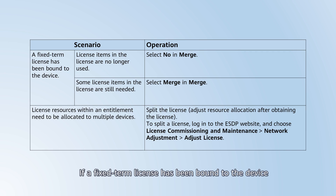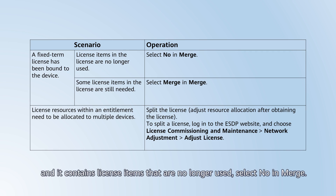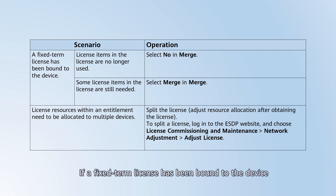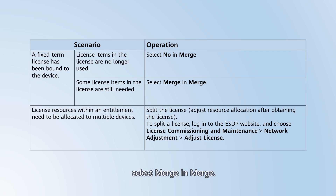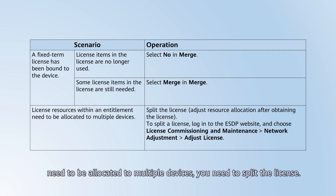If a fixed-term license has been bound to the device and it contains license items that are no longer used, select No in Merge. If a fixed-term license has been bound to the device and it contains some license items that are still needed, select Merge in Merge. If license resources within an entitlement need to be allocated to multiple devices, you need to split the license.